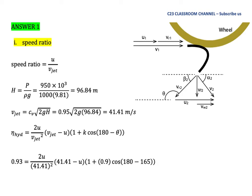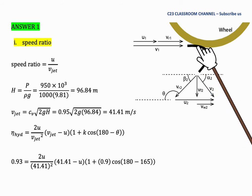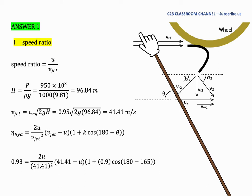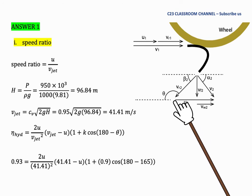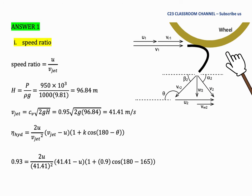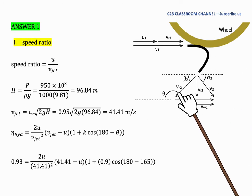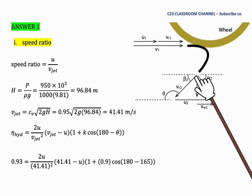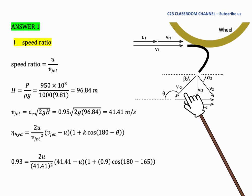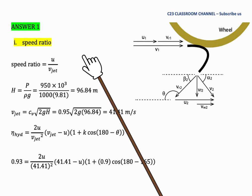Before we answer this question, please make sure that you could draw the velocity triangle for the Pelton wheel. We have a runner and a bucket. We draw the velocity triangle at inlet and the velocity triangle at outlet. The bucket angle here is 165 degrees, shown at this area. If you want to calculate any trigonometry from the velocity triangle, you need to use the angle equal to beta 2.